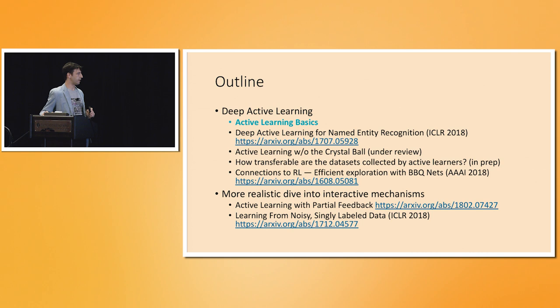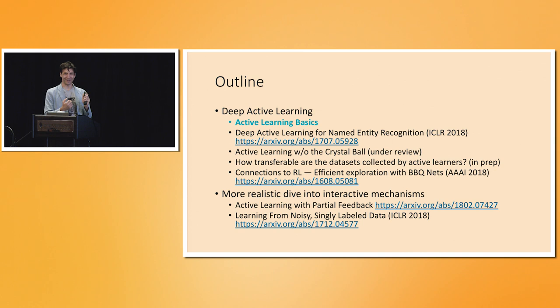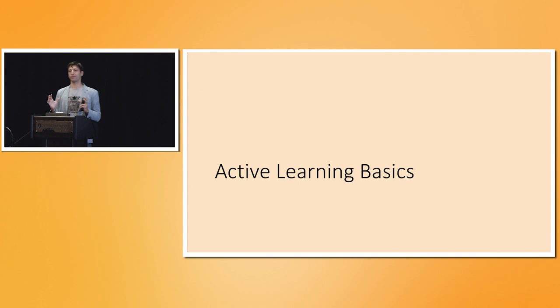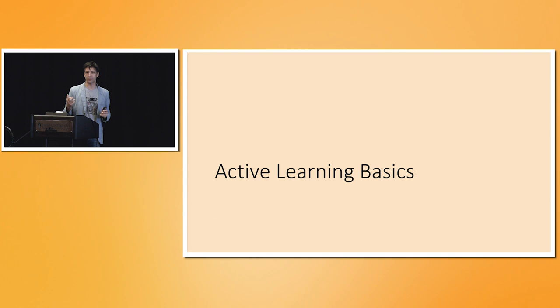Now I want to dive into active learning, which is the main thrust of this talk. Active learning is related to semi-supervised learning: we have a whole bunch of unlabeled data and can only afford to label a subset. But rather than the labeled subset being specified for us, we try to strategically choose what that labeled subset is.